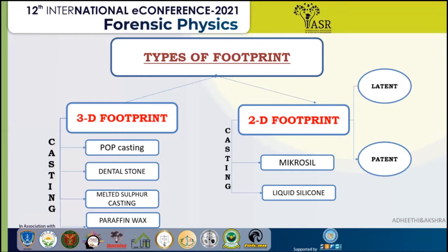There are mainly two types of footprints. The first is 3D footprints and the second is 2D. The main difference is that in 3D footprints, depth is added to length and width.